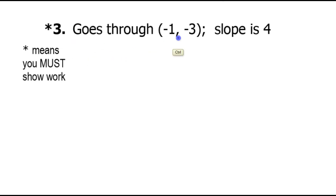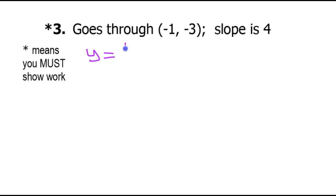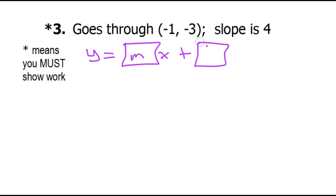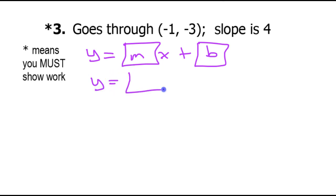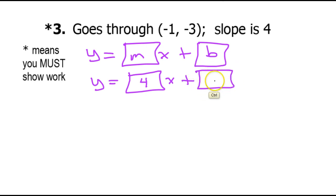Now, this is another set of information. We don't have a graph — we have a point that's on the line and we have the slope. We have one of the two things that we need. We always need the slope and the y-intercept, because we know it's going to be y equals mx plus b. We already have the slope, which is 4. So we know that it's going to be y is equal to 4x plus b. All we need is the b — that's our goal.